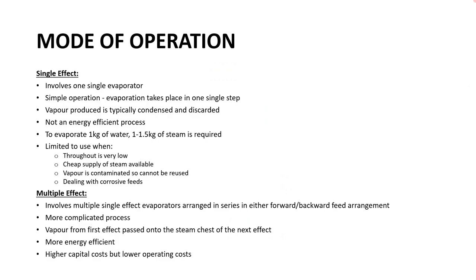There are a number of different modes of operation in an evaporator. The most simple is a single effect evaporator, where evaporation takes place in one single step using one evaporator. As a result the process is relatively simple; however, the vapour that is produced is then condensed and typically discarded, which is quite wasteful. Typically, to evaporate one kilogram of water using a single effect evaporator would require anywhere between 1 to 1.5 kilograms of steam, which is not very efficient.